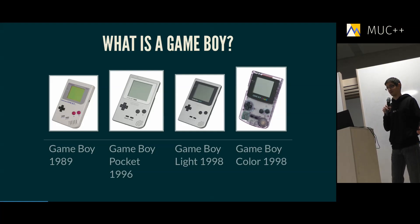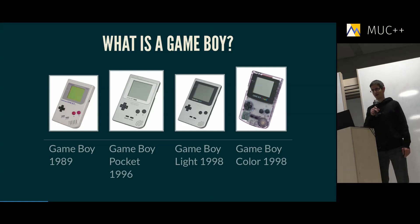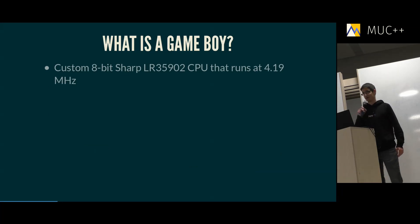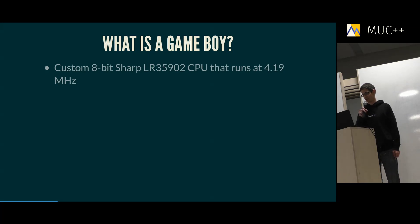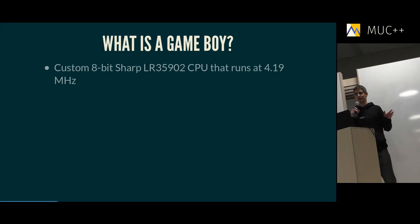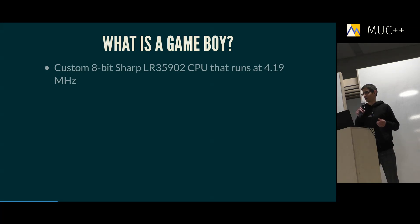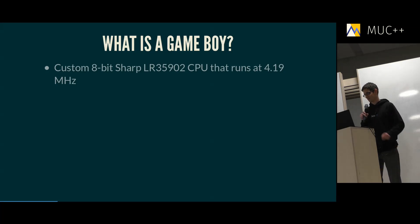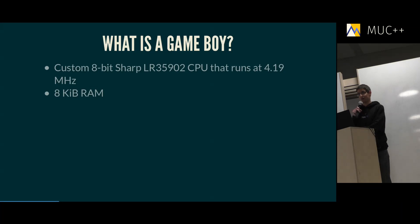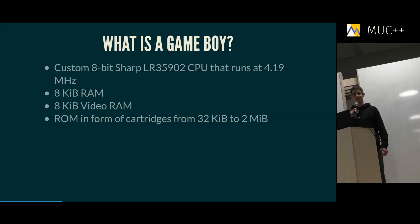They were actually produced until 2003. In a bit more detail: the Gameboy has a custom 8-bit CPU made by Sharp that runs at around 4 megahertz. If you look up specs online you sometimes read it runs at 1 megahertz — that's not actually true, but the whole architecture is limited by the speed of the RAM and you can only access RAM at 1 megahertz. It has 8 kilobytes of RAM and 8 kilobytes of video RAM.